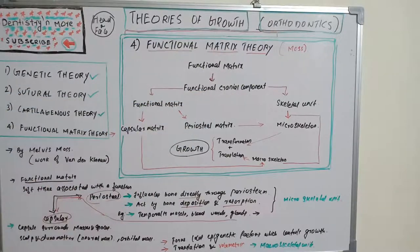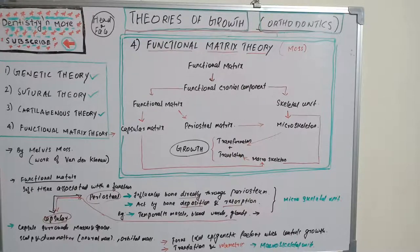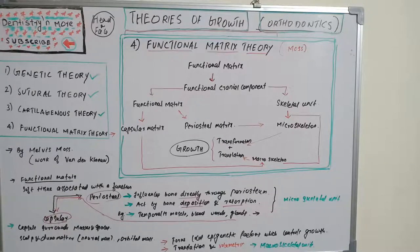It was given by Melvin Moss. Functional matrix theory claims that the origin, growth, form, position, and maintenance of all skeletal tissues and organs are always secondary, compensatory, and obligatory responses to temporarily and operationally prior events that occur in specifically related non-skeletal tissues, organs, or functioning spaces — also known as functional matrices.